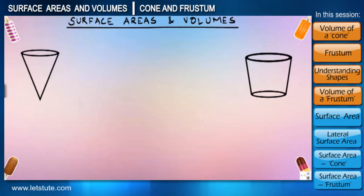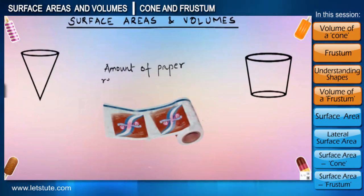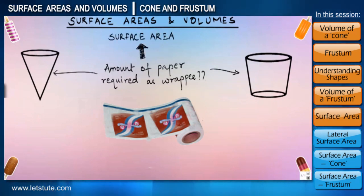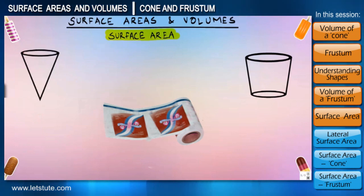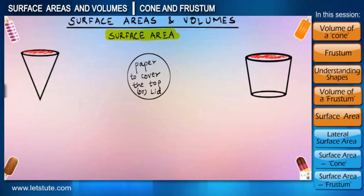Anyways, moving forward, let us calculate how much paper the company will require to wrap each of these two shapes, and we'll try to calculate for both simultaneously. The paper or lid with which we cover the top of the cone as well as the cup is always a circular shape right? So for that surface we can use formula for area of the circle which we already know is pi r square, but in cup there are two circular surfaces so for that we can use pi r1 square and pi r2 square for two different radii.